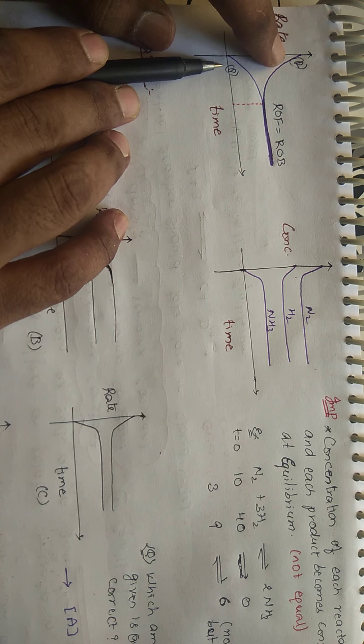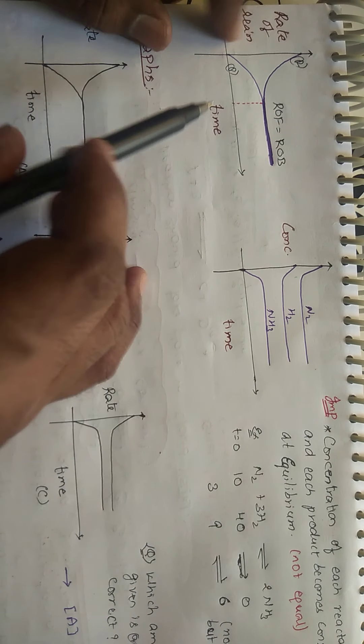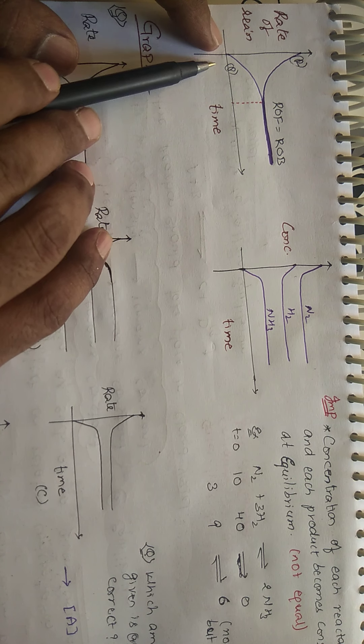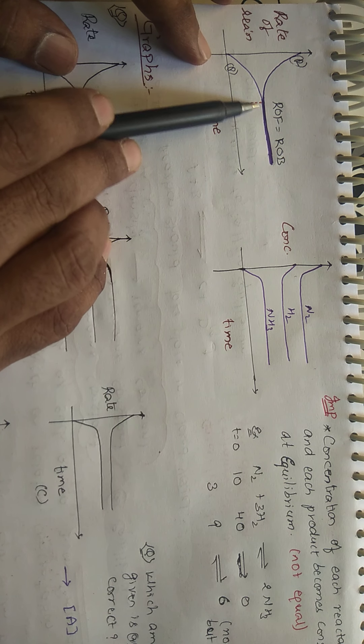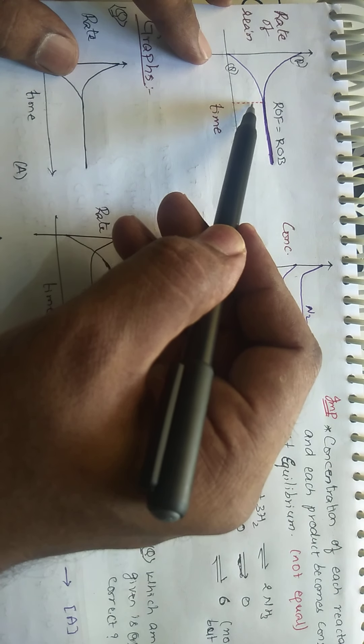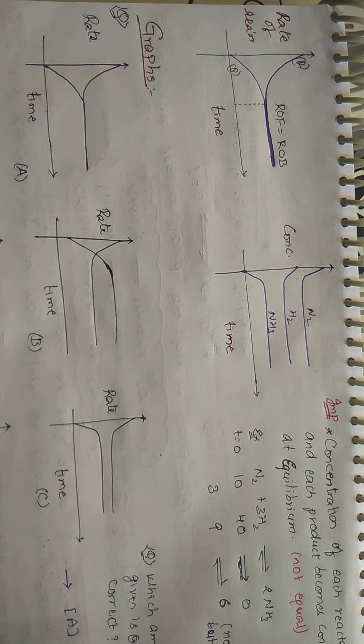Let us take a graph example. With respect to rate versus time: for the reactant, at starting time the rate is very high. As time increases, it decreases and eventually becomes a parallel constant line. For the product, at starting time the rate is very low; as time increases the rate of the product is increasing. At one particular point, the rate of forward reaction becomes equal to the rate of backward reaction — that is the equilibrium point.